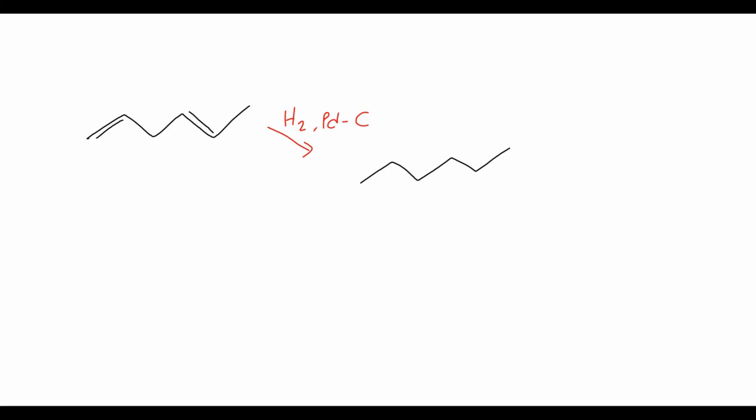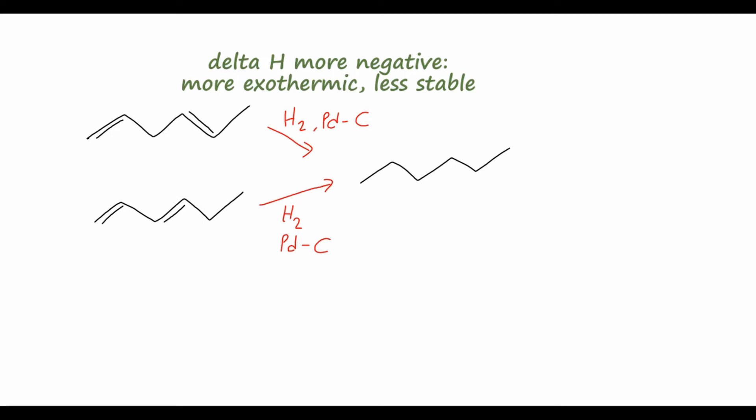Then if we look at a different diene — 1,3-hexadiene — where we have two double bonds that are conjugated, separated by only one single bond, and we perform the same reaction with hydrogen gas and palladium on carbon, this forms the same hexane compound. If we measure the heats of reaction, we find that the heat of hydrogenation of the first compound is more negative than the second. A more negative heat of reaction means it's more exothermic, meaning the products are more stable than the reactants. So the non-conjugated alkene is much less stable than the conjugated alkene. Although these two compounds are the same in other respects — each having one monosubstituted and one disubstituted alkene — the conjugation in the second lends extra stability to that molecule overall.